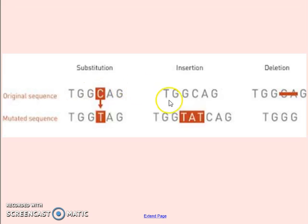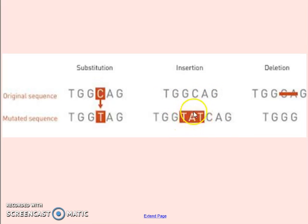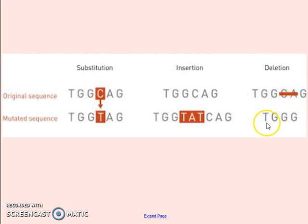Insertion is where you have your original sequence TGGCAG, and then a new section is inserted here right in the middle, so this extra TAT is included — you've added new base pairs to your sequence. Deletion is the exact opposite: if you have your original sequence TGGCAG and then this section is deleted, you end up with just TGGG.